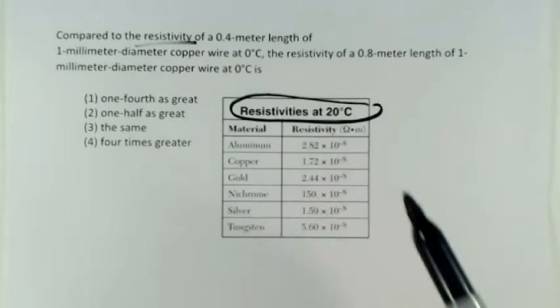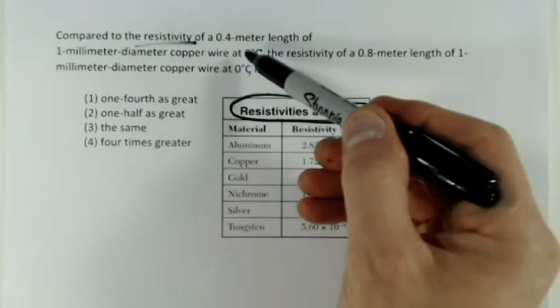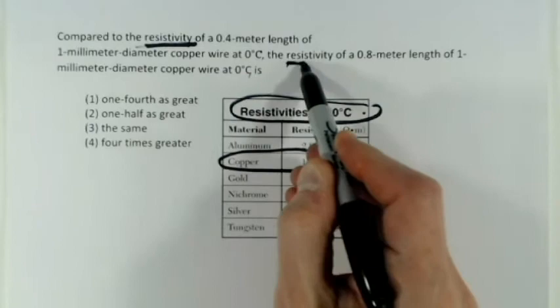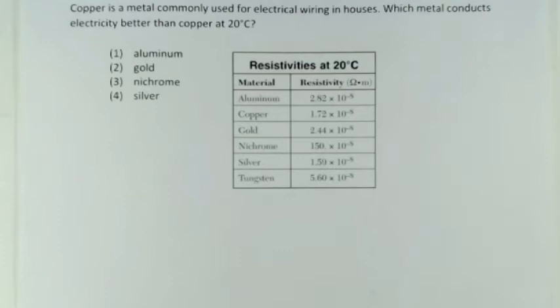If you look at your chart of resistivities, these values are measured at 20°C, but both wires here are measured at the same temperature — 0°C. The resistivity of a material is constant at a given temperature; changing the length does not affect resistivity. It's not asking about resistance, it's asking about resistivity. The answer is the same — resistivity does not change.